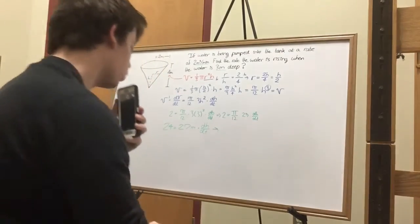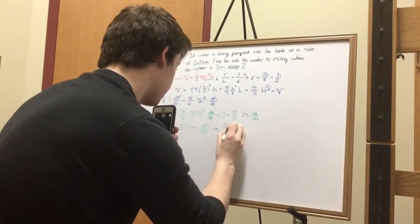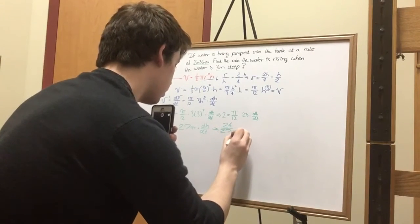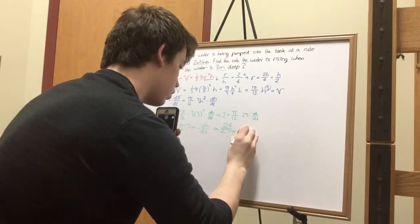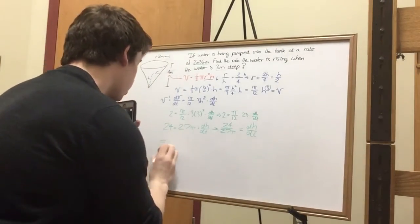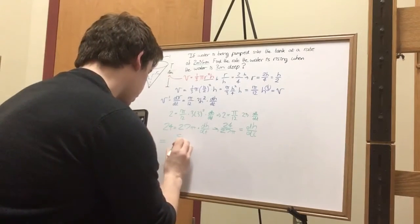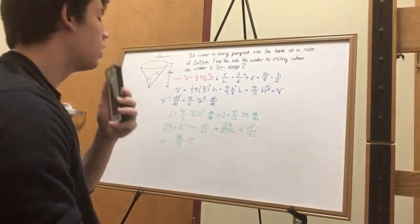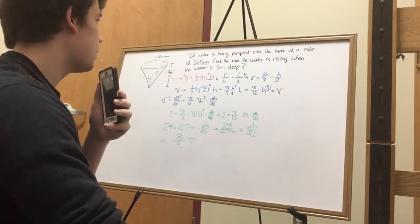So I'll divide that, divide twenty-seven pi by both sides. It'll give us twenty-four over twenty-seven pi equals our change in height over time. That gives us our grand solution. When you simplify, eight over nine pi. And if you want to get fancy up in here, it would be meters per minute.